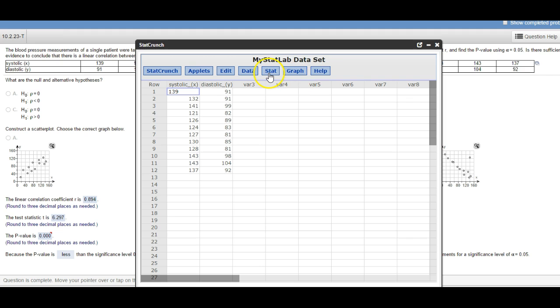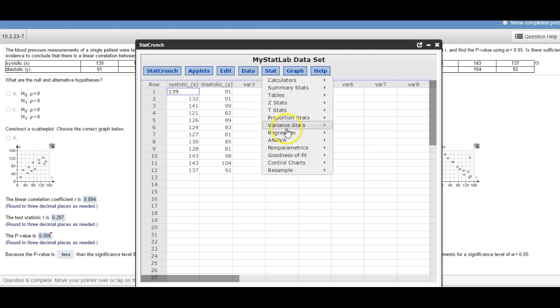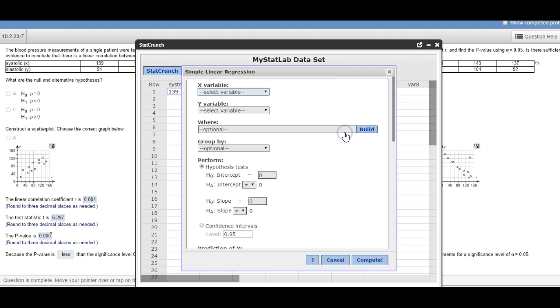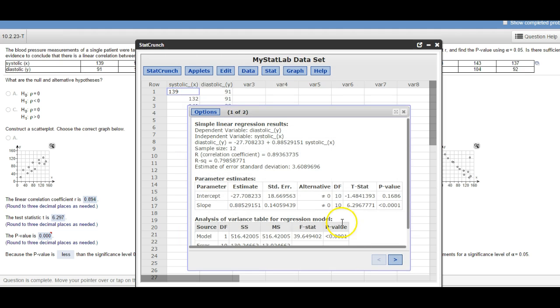So you can get all that stuff from here. But again, how did I get it? One more time: STAT, Regression, Simple Linear, and then basically just once you get your variables you can just go straight to compute and there's your numbers.